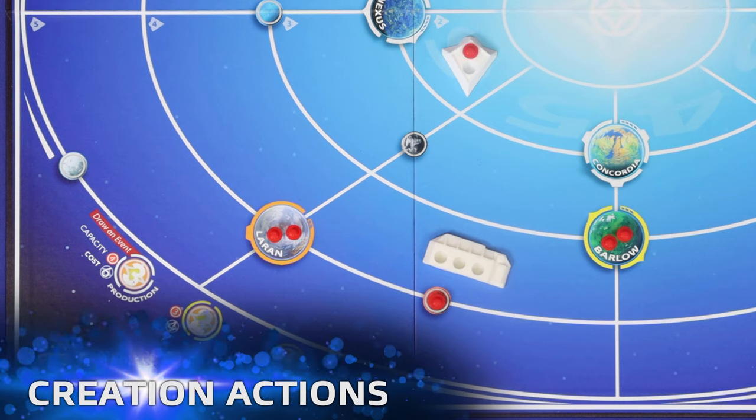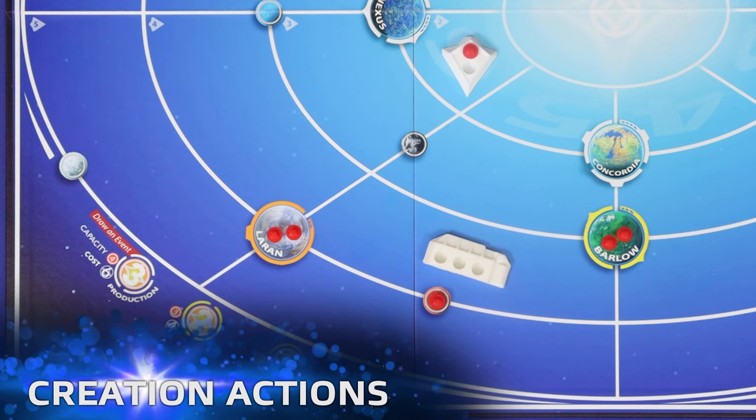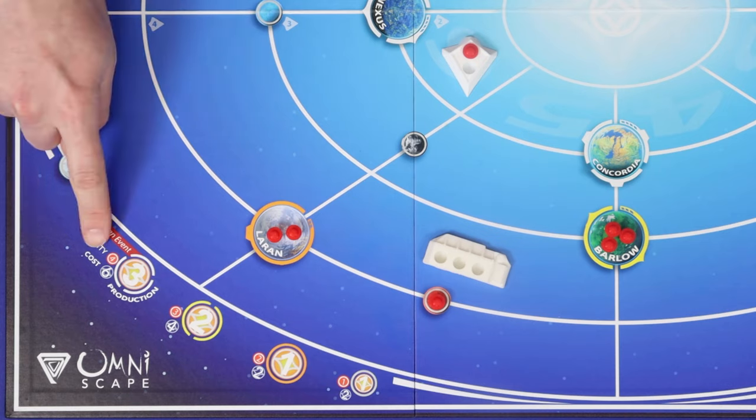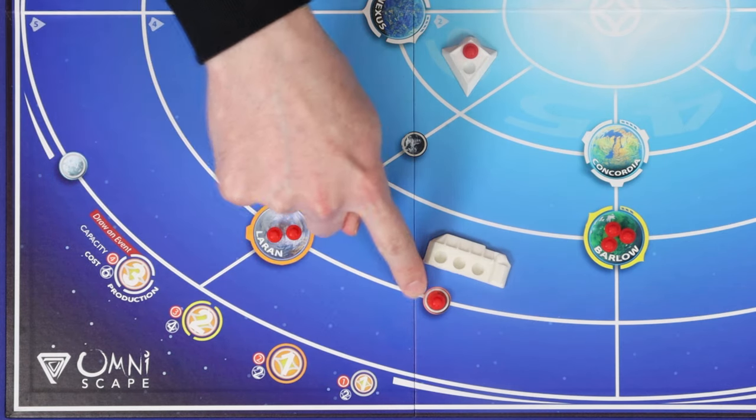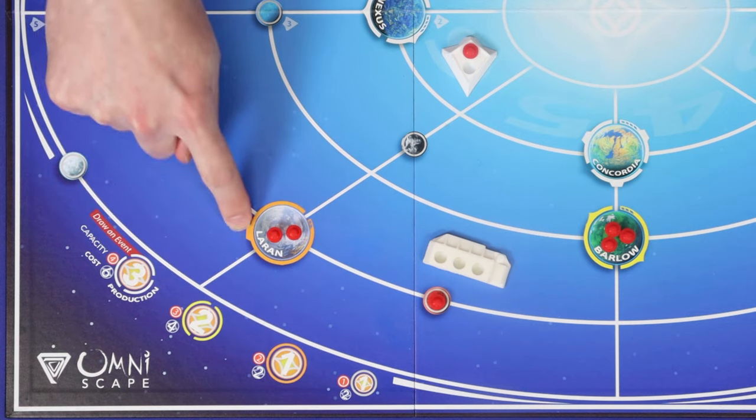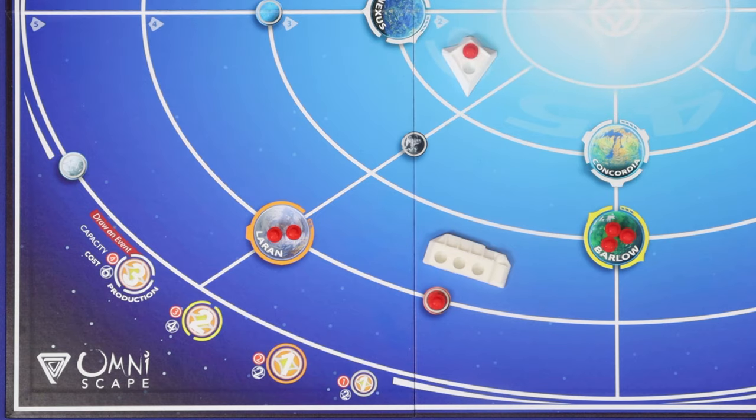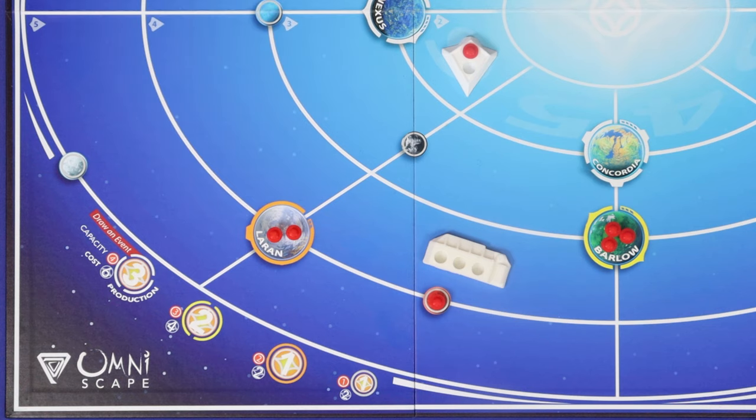The next set of actions covers the creation of new colonies or ships. For one energy, you can create a new colony on a planet that you've already colonized. Each size of planet has a colony limit. Moons can only hold one colony, outer ring planets can hold two, middle ring can hold three, and inner ring can hold four. As such, as the board is laid out right now, red cannot create any more planet-born colonies.